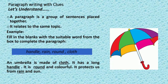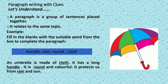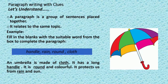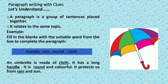I am sure you must have thought of the correct answers. Let us check them. An umbrella is made of cloth — we will choose the word cloth from the box. It has a long handle — handle is a suitable word for this blank, isn't it? It is round and colorful — here I have chosen the word round. It protects us from rain and sun — the word rain is given in the box, and it is the most suitable one. Of course.